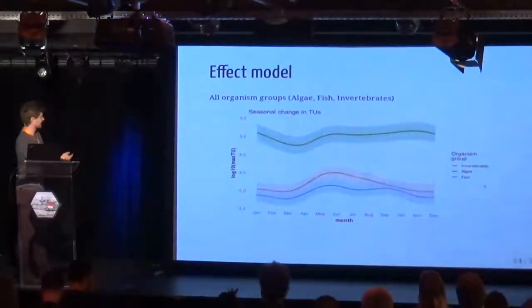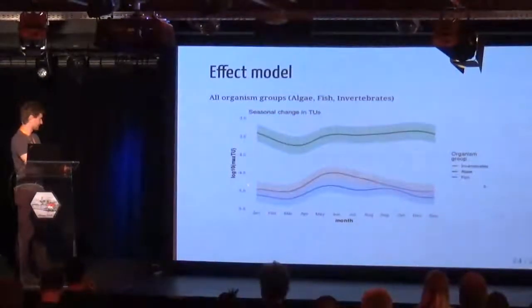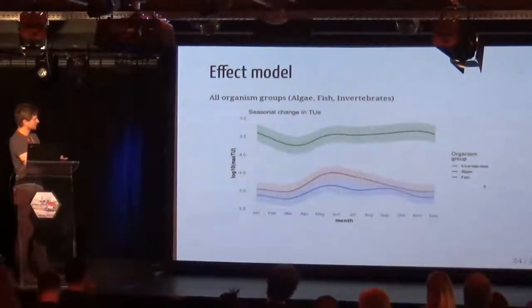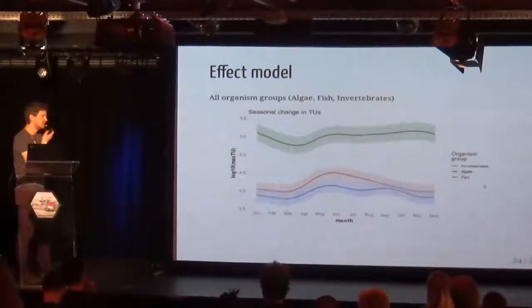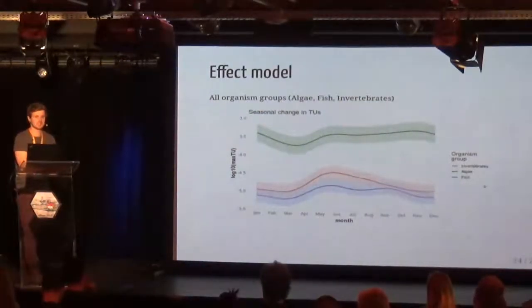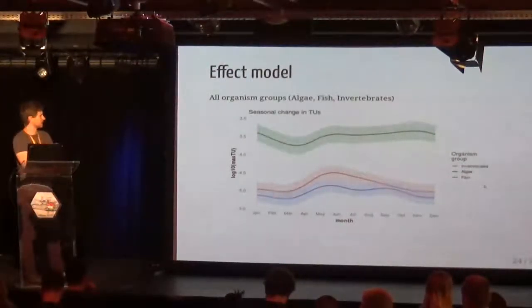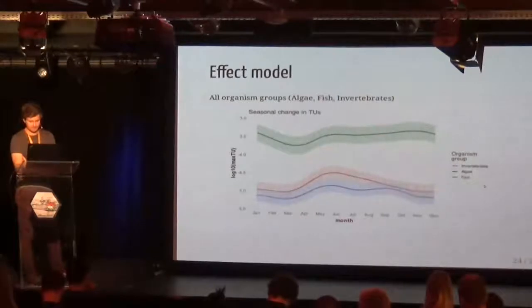In the effect model we modeled the maximum toxic unit for algae, fish, and invertebrates in dependence of month and sites, with a random effect and normally distributed response. We see a seasonal pattern for the three maximum toxic units. Generally, the toxic units are in the range of minus three to minus five. From the literature we know that we would expect effects on aquatic communities for values above minus 2.5.